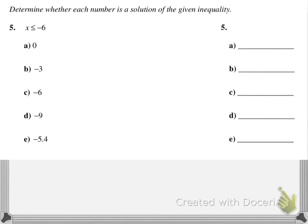So let's look at some possible solutions. Here's an inequality: x is less than or equal to negative 6. We need to determine whether each number is a solution or not — just a yes or no by comparing. For (a), is 0 less than or equal to negative 6? The answer is no. Zero is actually greater than any negative number.